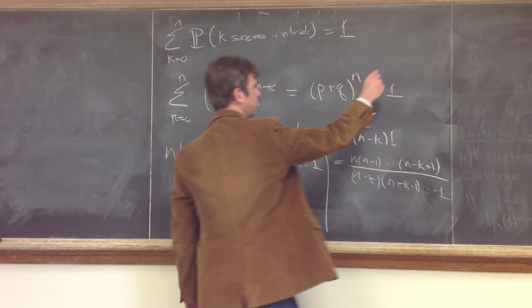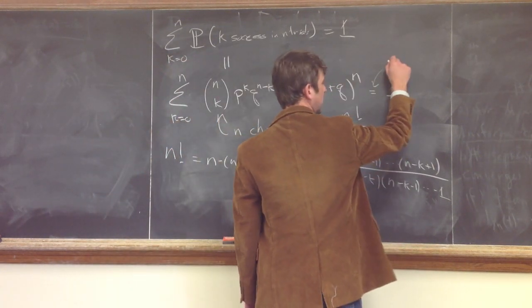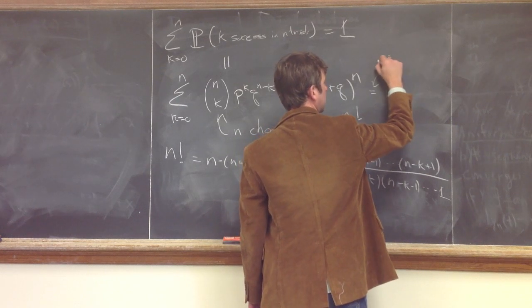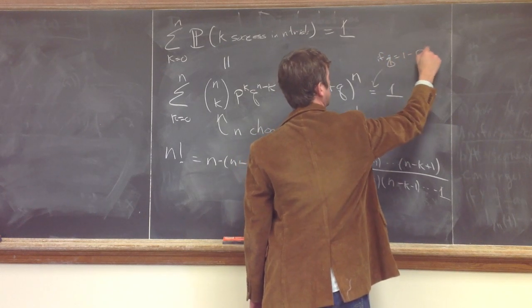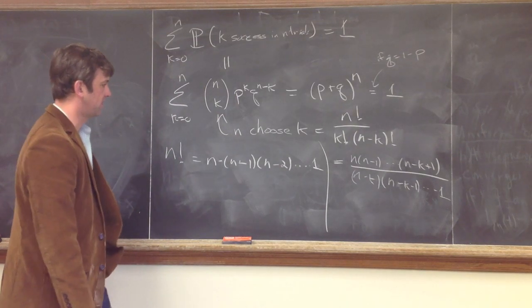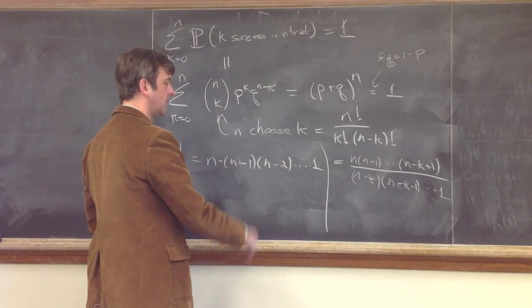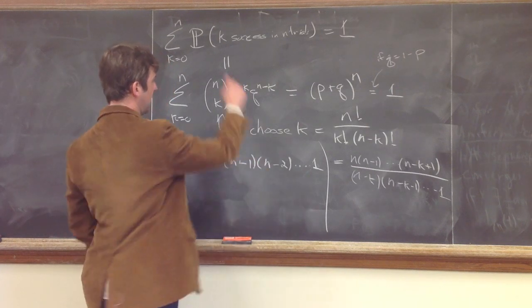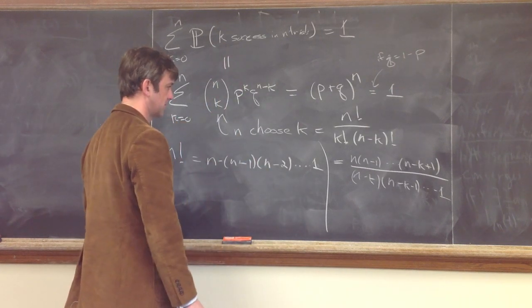If this is true in general for any numbers p and q, but if we set q equal to 1 minus p, so this gives the probability of having n successes in k trials.